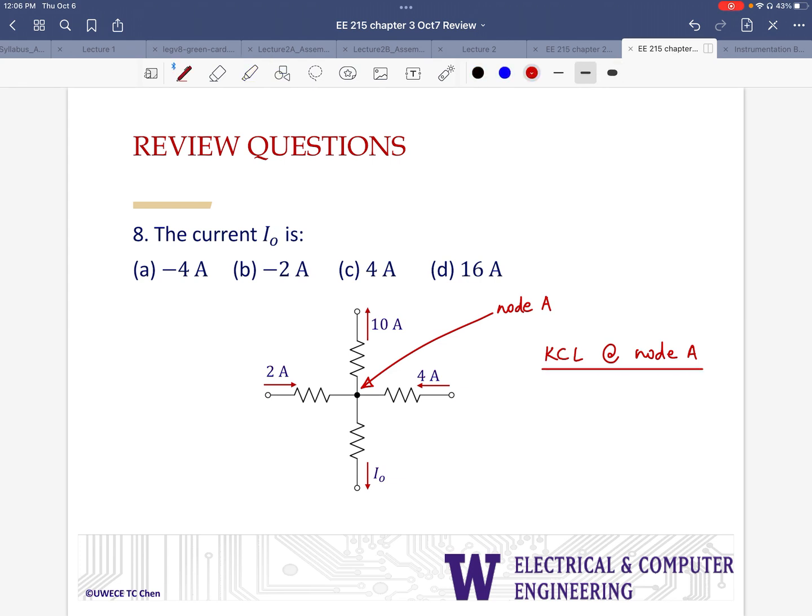I've got currents coming in as 2 and 4. Should equal currents going out, 10 amps plus I sub 0. And I sub 0, in this case, should be minus 4 amps. So that gives me the answer.